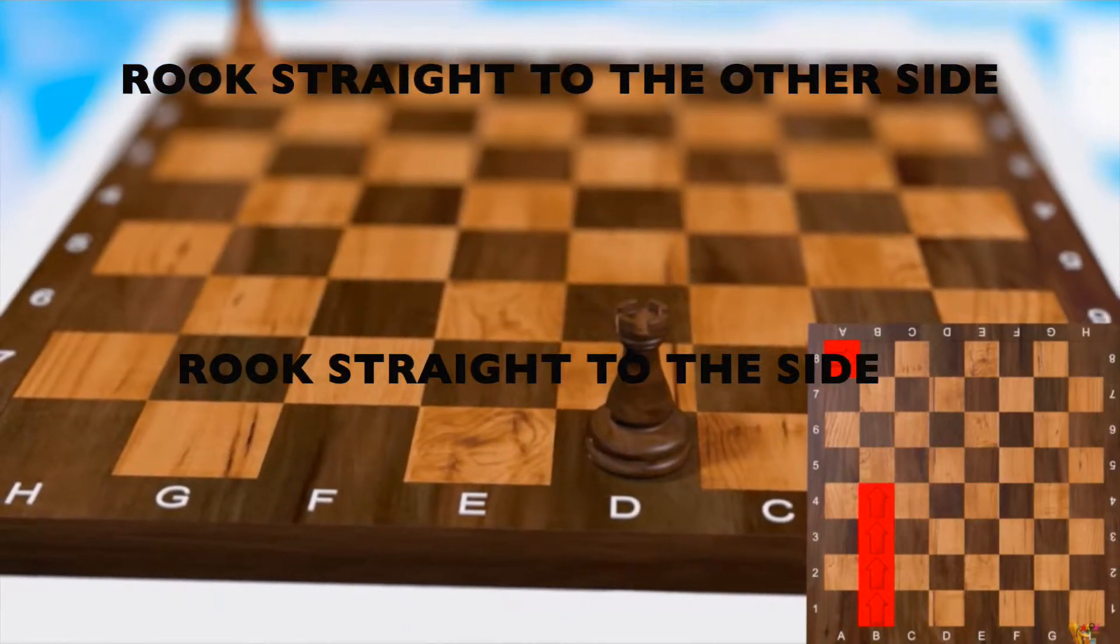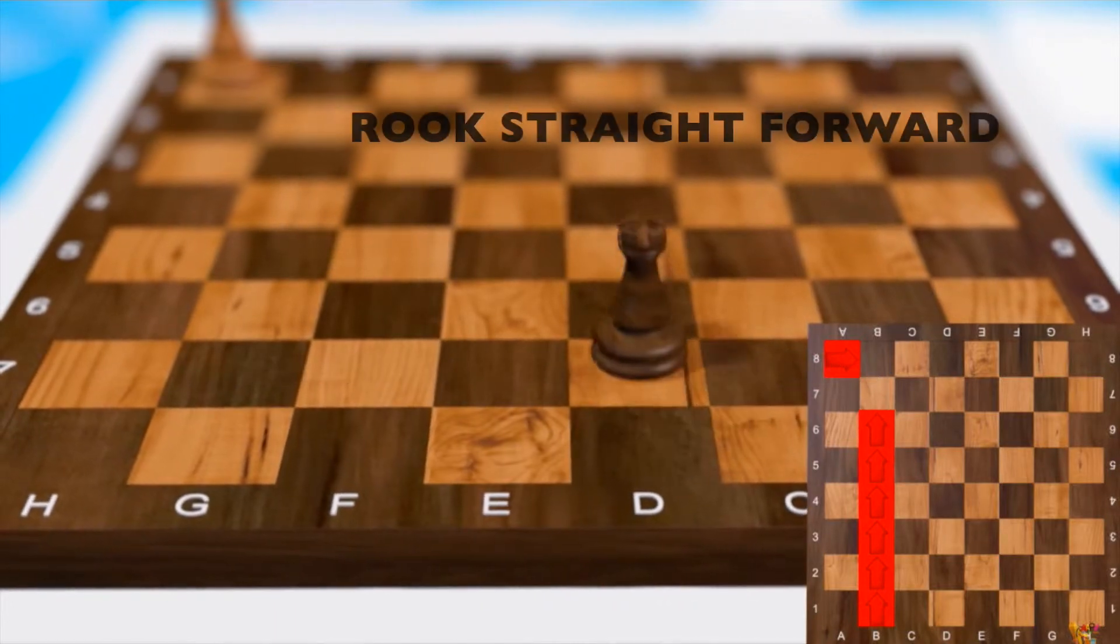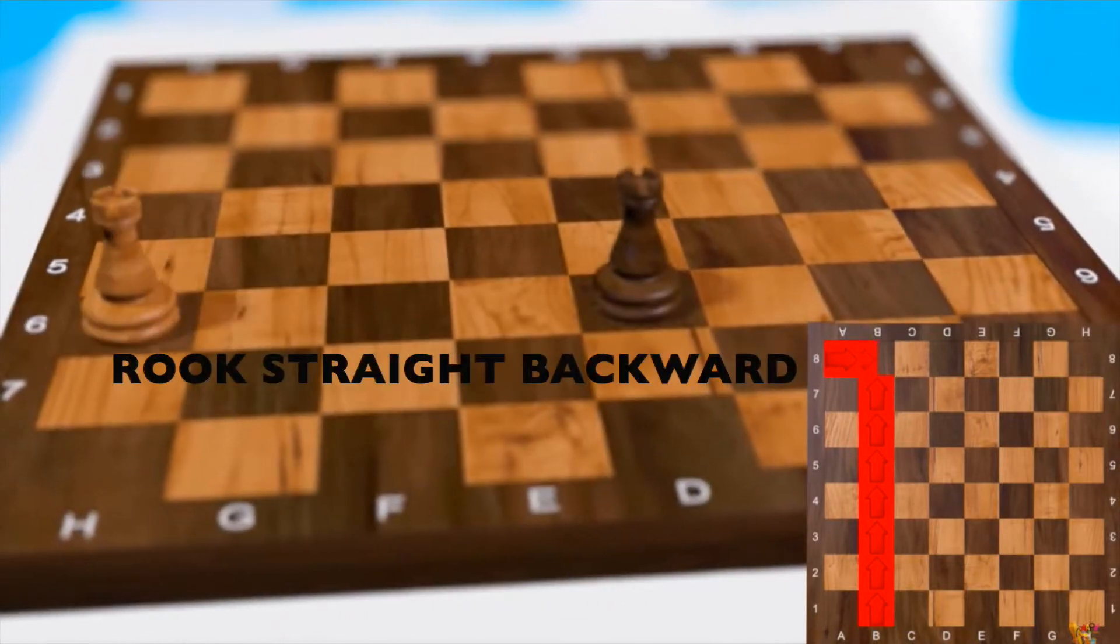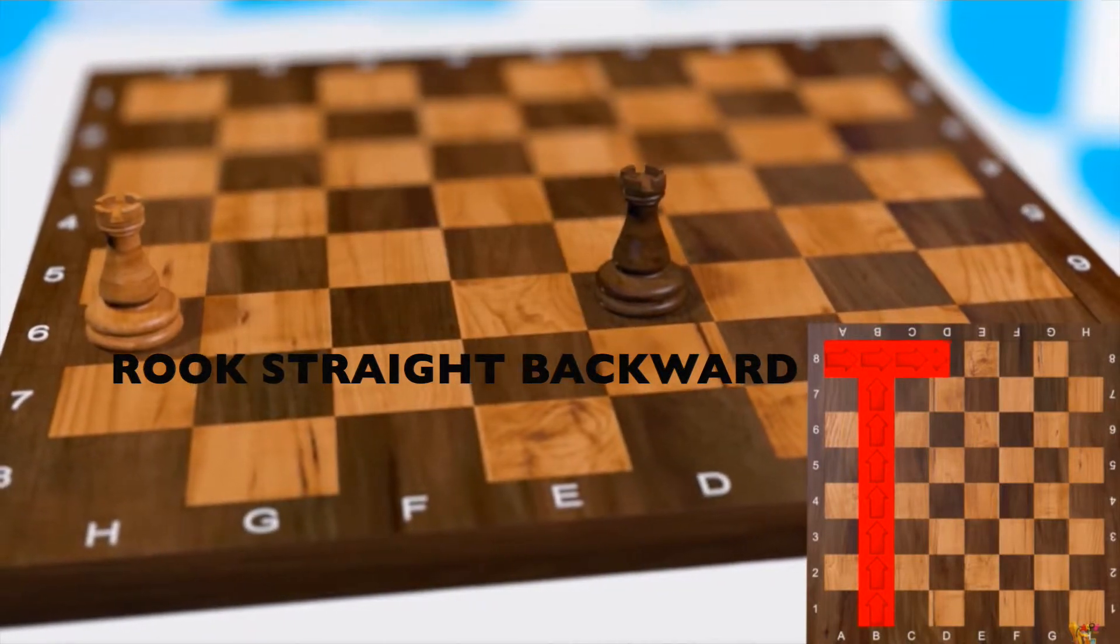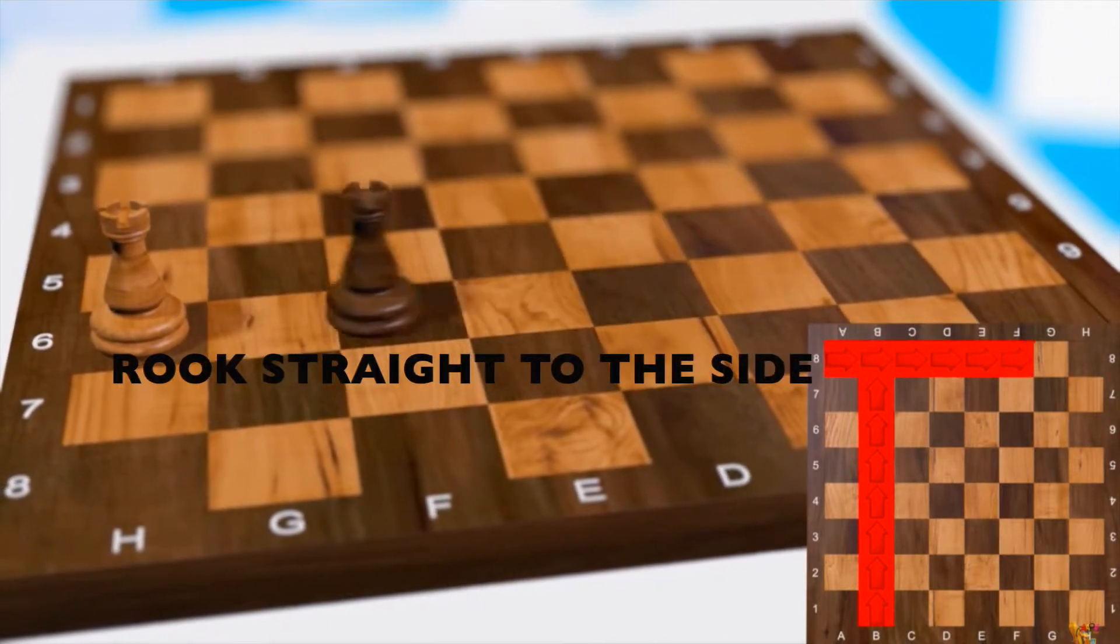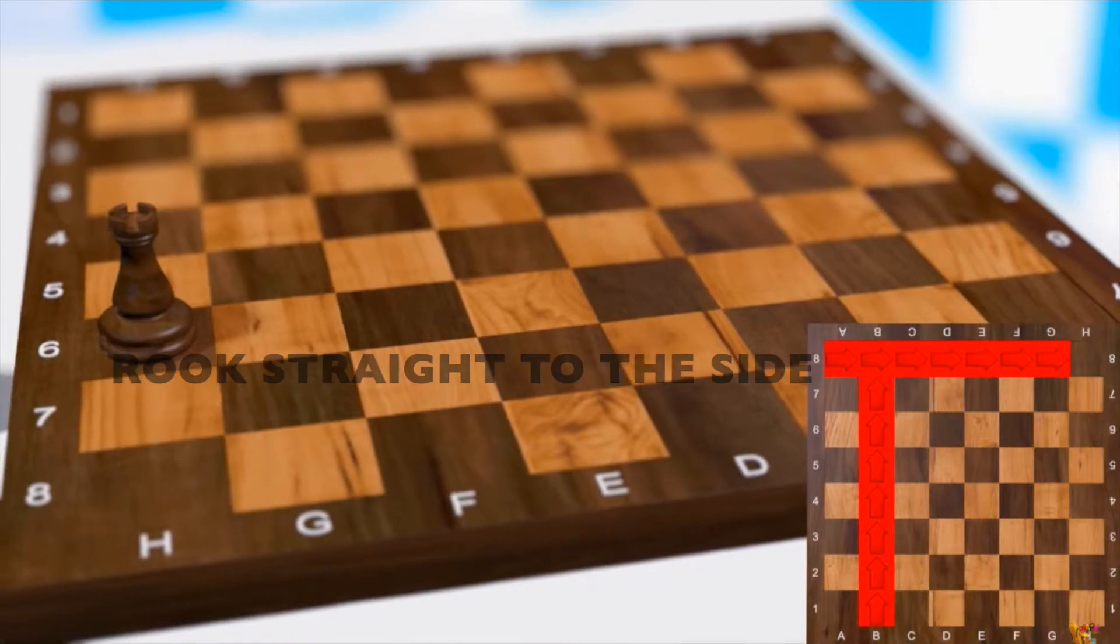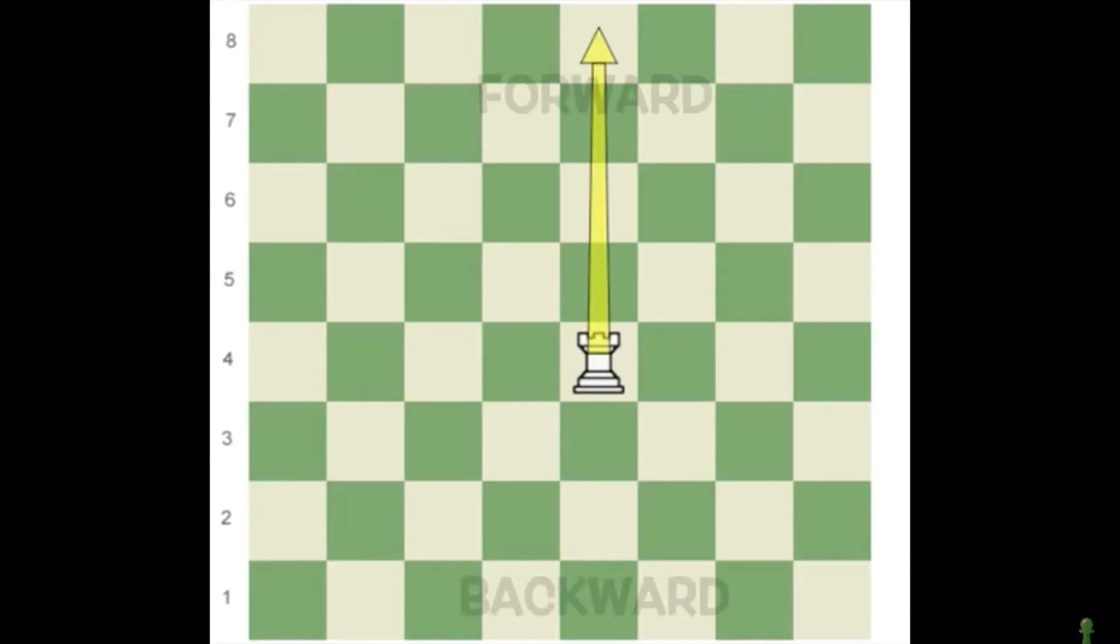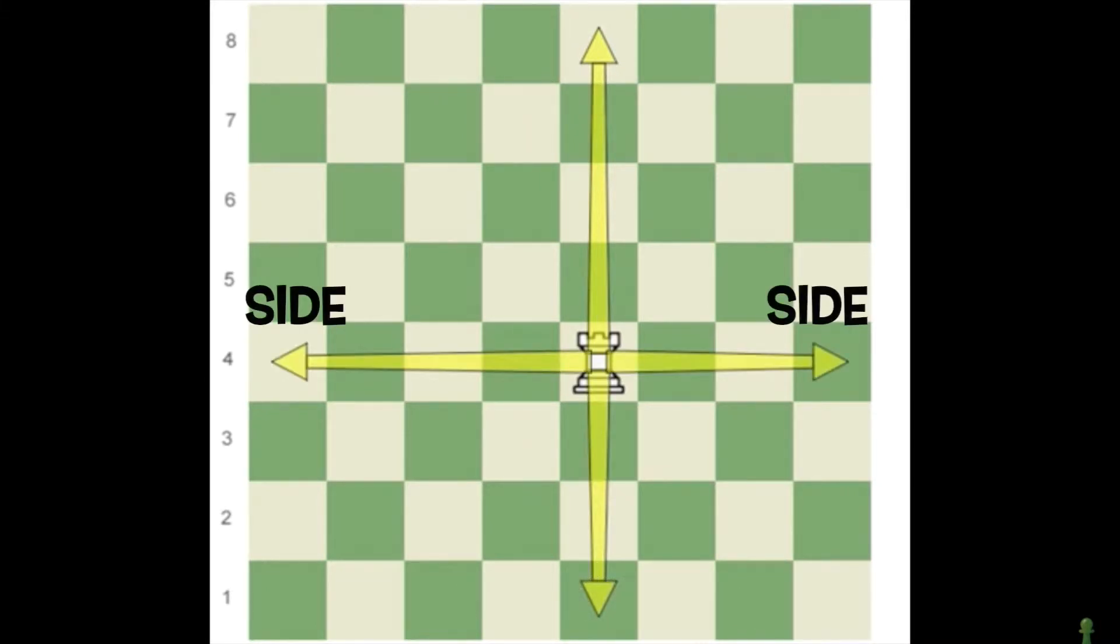Rook can only move straight. It can go as many squares as the board allows it. Forward, backward, and to the side. Easy peasy. Let's get right to practice, since practice makes good.